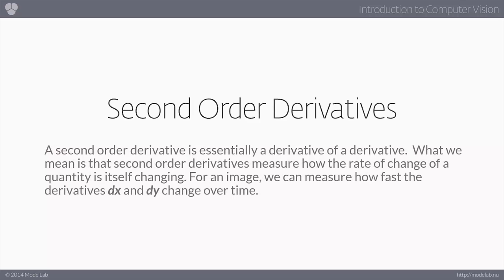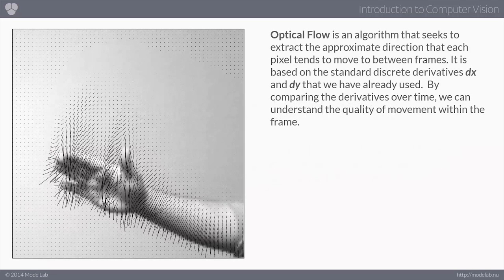In this case, we're measuring how fast a change of dx and dy are changing. However, we're comparing it over time, which is going to give us an actual magnitude or an understanding of how movement, in this case, because the brightness is changing in the image based on what's moving, we can actually use an algorithm called optical flow. Optical flow basically extracts the approximate direction that each pixel tends to move between the frames. It's using those same dx and dy, but it's comparing it over time.